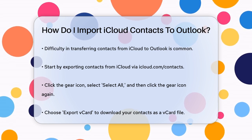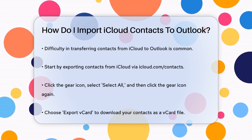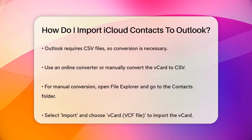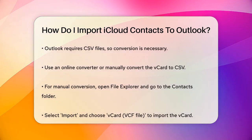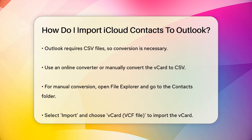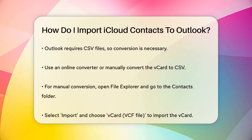Now you have a vCard file, but Outlook uses CSV files. You'll need to convert the vCard file to a CSV file. You can use an online converter to do this, or follow a more manual process.